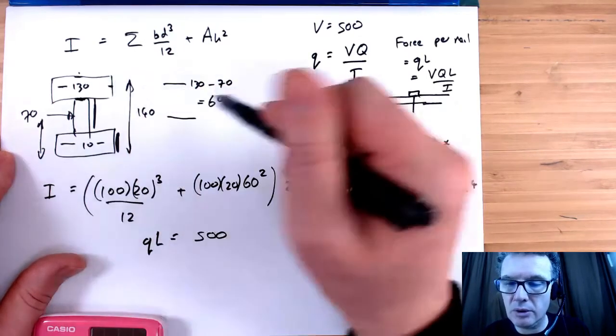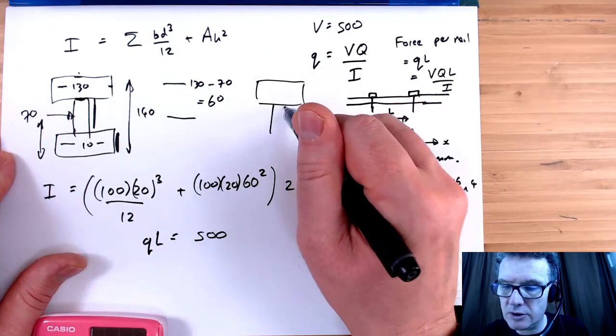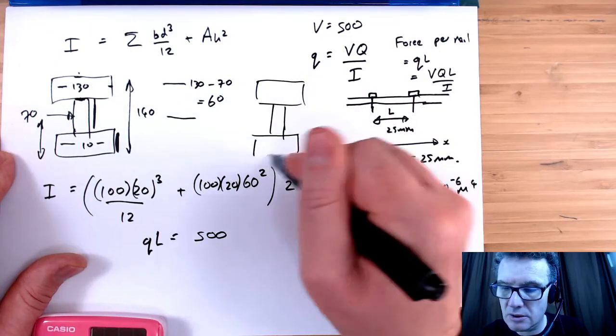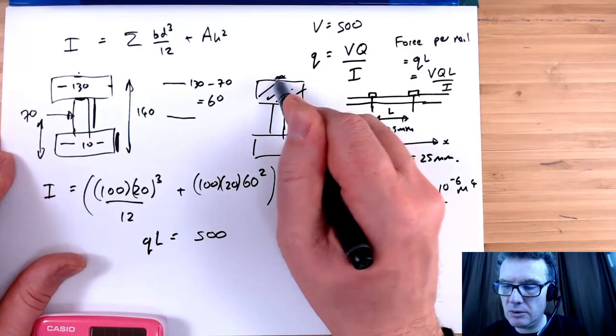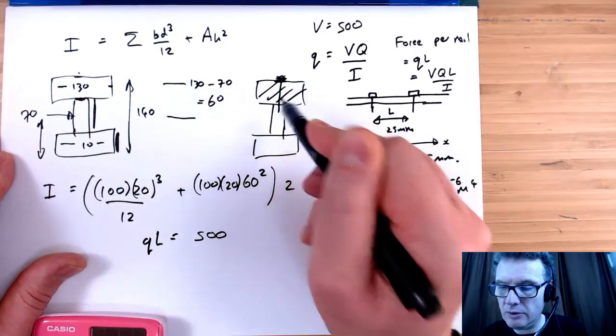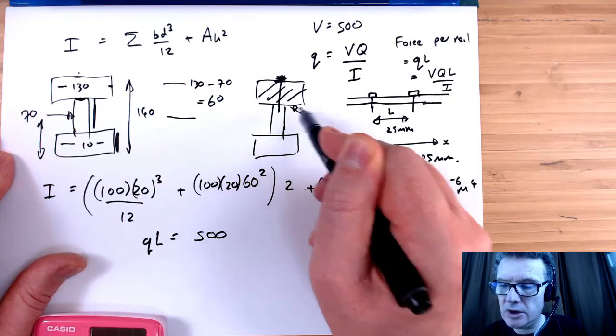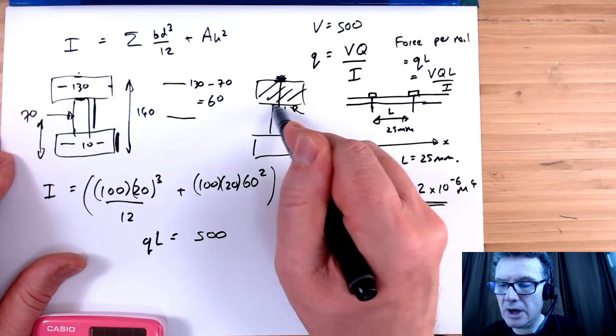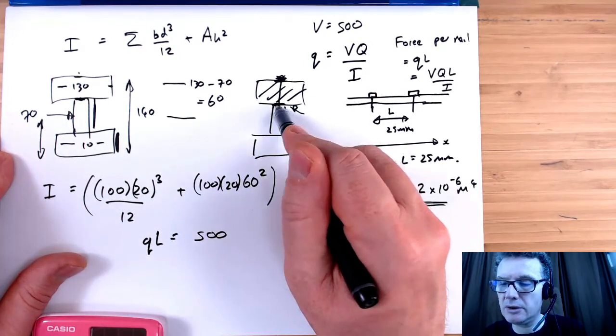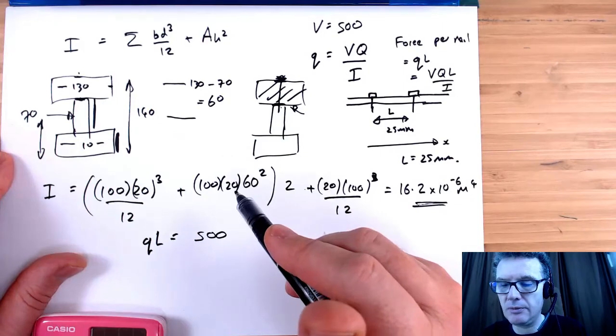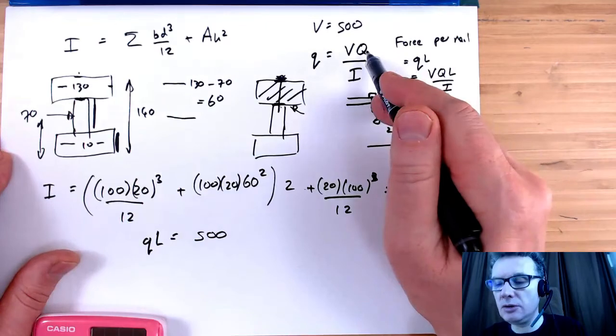Q, well that's the second moment of area for the top section. We've got the nail, it's going all the way through. So we're interested in what is happening in terms of the shear stress at this location here, where the nail has gone through that section.